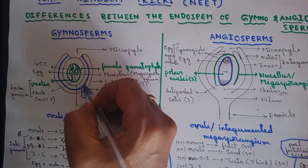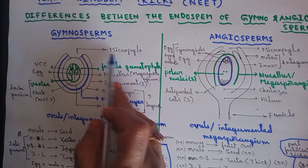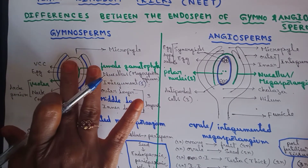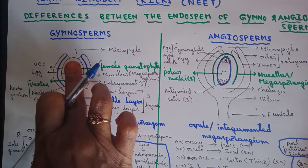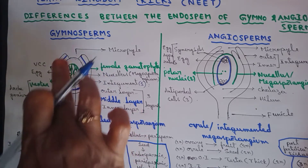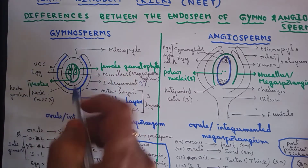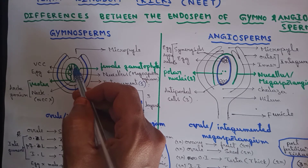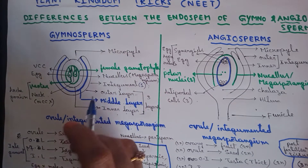This integument covers the entire body of the ovule except at the top, forming an opening called micropyle. Inside the nucellus, one of the nucellar cells gets differentiated into a megaspore mother cell. This megaspore mother cell undergoes meiosis to form four megaspores. Among four megaspores, one is functional and three others degenerate.